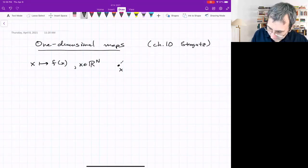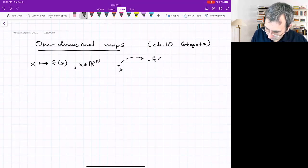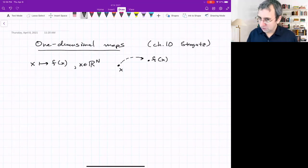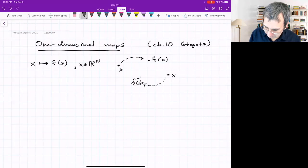and it assigns that to a new point, which we would call f of x, which is also an Rn. So we'd say this is a map of Rn to itself. And we'll typically be looking at situations where if you have a point, it has a unique inverse.